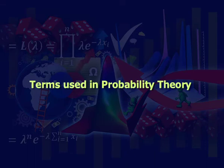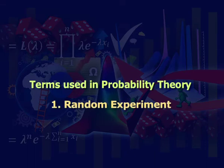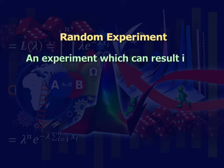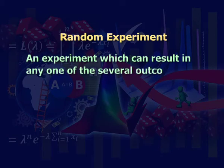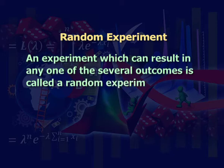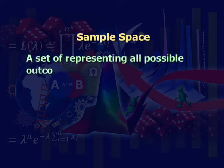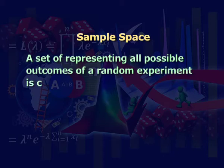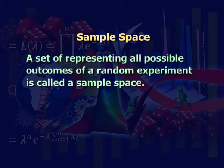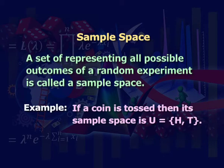Let us see the terms used in probability theory. Number one: random experiment. An experiment which can result in any one of the several outcomes is called a random experiment. For example, tossing of a coin. Second: sample space. A set representing all possible outcomes of a random experiment is called a sample space. For example, if a coin is tossed, then its sample space is S equal to {head, tail}.